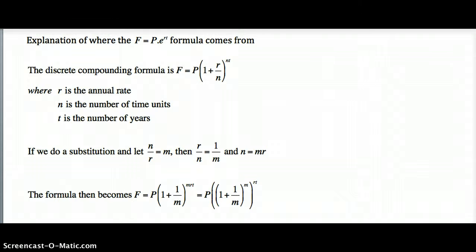Howdy, managed to coax my computer to start up again. See how long that lasts. Anyway, here's just a quick explanation of where that continuously compounding interest formula comes from. You might remember from last night's prep, the formula was F equals P times e to the rt.